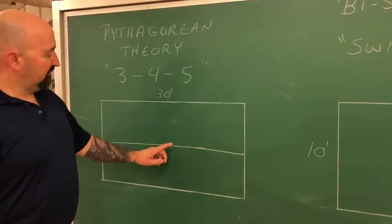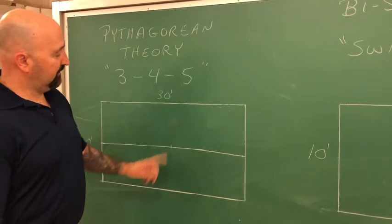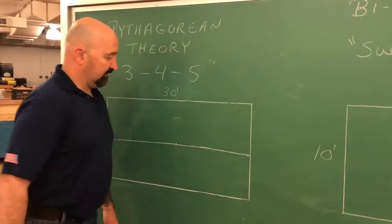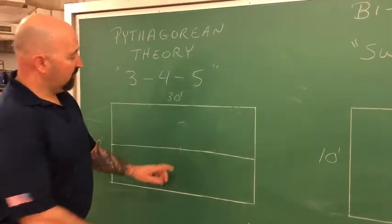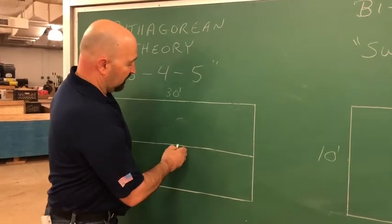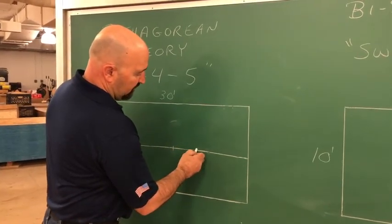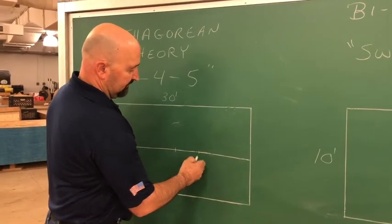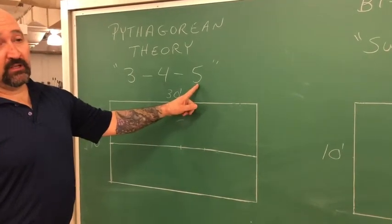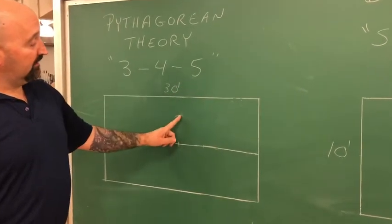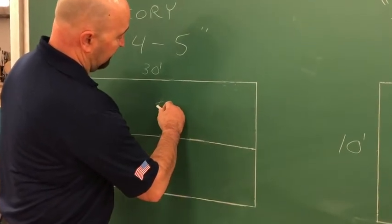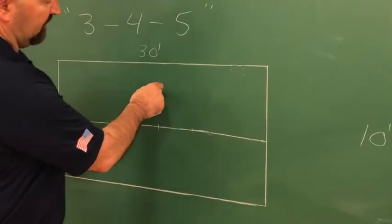Starting from our center point, we're going to go up 3 feet and swing an arc. Now from our center point, to the right or the left — it doesn't matter which way you go — we're going to go 4 feet and make a mark on the control line. From your 4 mark, you're going to use the 5 and you're going to intersect the 3 line and create an arc, which is going to give you a center point.